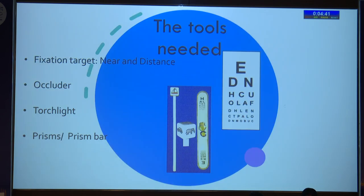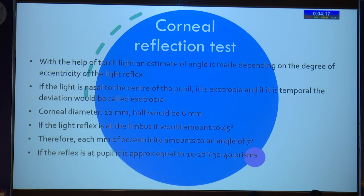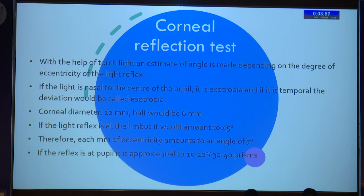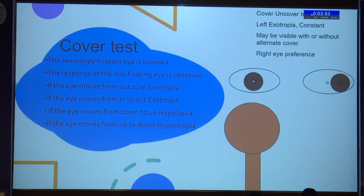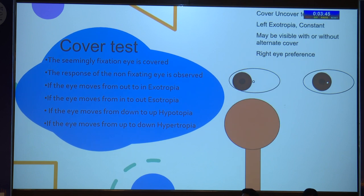We need a fixation target for near and distance — a torchlight is only for the corneal reflection test. If we are planning to operate or work up a strabismus patient, we need to control accommodation, which is only possible with an accommodative target. We need an occluder and a prism bar to measure the amount of deviation. The corneal reflection test is a simple test meant only to get a gross idea, as it is full of errors — you may end up diagnosing pseudo-eso or pseudo-exo or encounter a high or low angle kappa. Basically, it gives you a gross idea of which is the fixing eye.